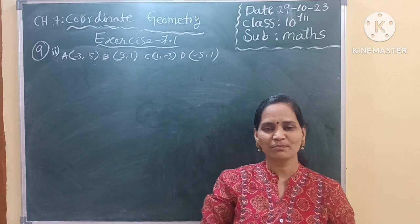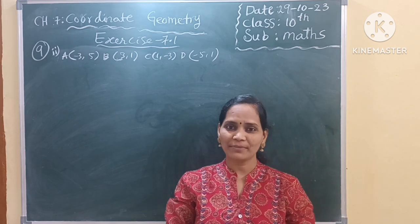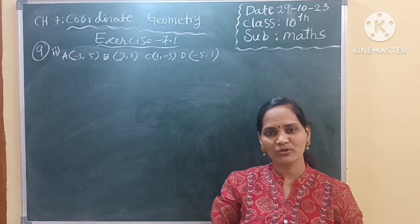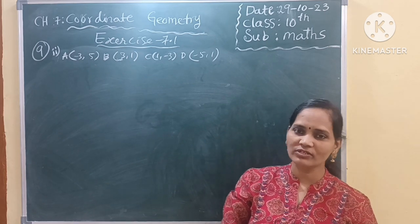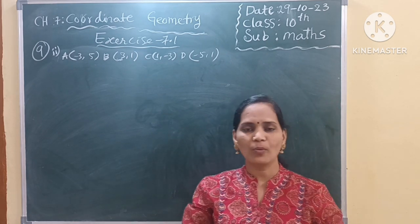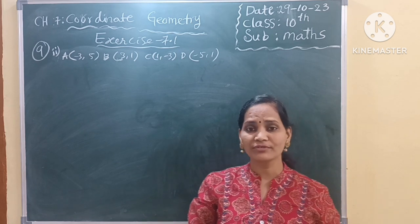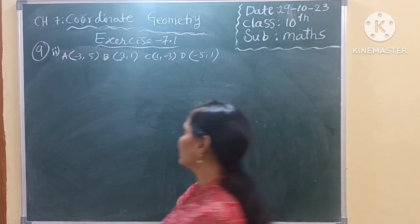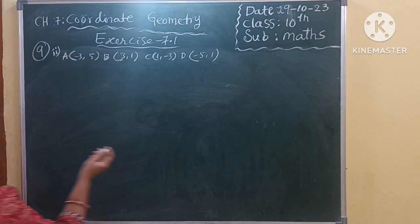In this video I am going to explain 10th class Maths Chapter 7 Coordinate Geometry, the 9th question, 2nd bit. Actually this question gives 4 points. By using those 4 points we should show which type of quadrilateral will form. So let us see the 4 points.